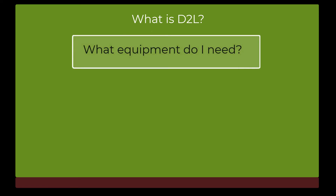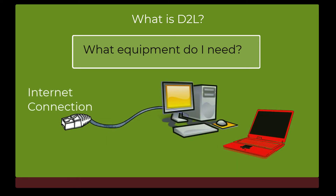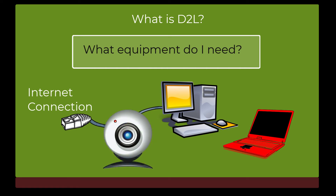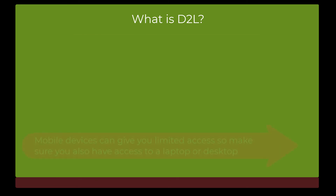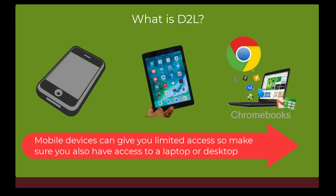Equipment needed for D2L includes an internet connection and a device, such as a laptop or a desktop computer. Some classes may require a webcam with a microphone — check with your instructor to find out if this is needed. Mobile devices, such as smartphones, Chromebooks, or iPads, can be used, although some online tools may not work as well with these devices. So having access to a laptop or desktop is a good idea.